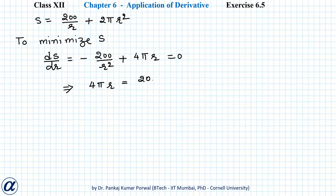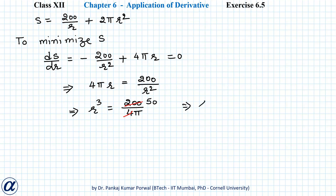Setting dS/dr = 0 gives 4πr = 200/r², or r³ = 200 / 4π. We can cancel 4 into 200 to get 50, so r³ = 50/π, which gives r = (50/π)^(1/3).